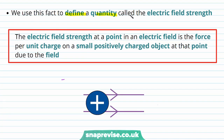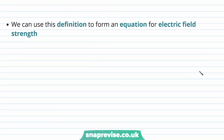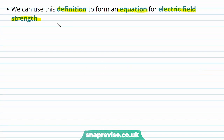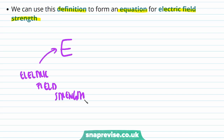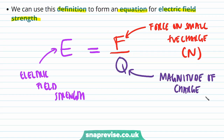We can use this fact to define a quantity called the electric field strength. The electric field strength at a point in an electric field is the force per unit charge on a small positively charged object at that point due to the field. So the electric field strength E is equal to the force F on a small positive charge, measured in newtons, divided by the magnitude of charge, measured in coulombs. Therefore, the unit for electric field strength is newtons per coulomb.